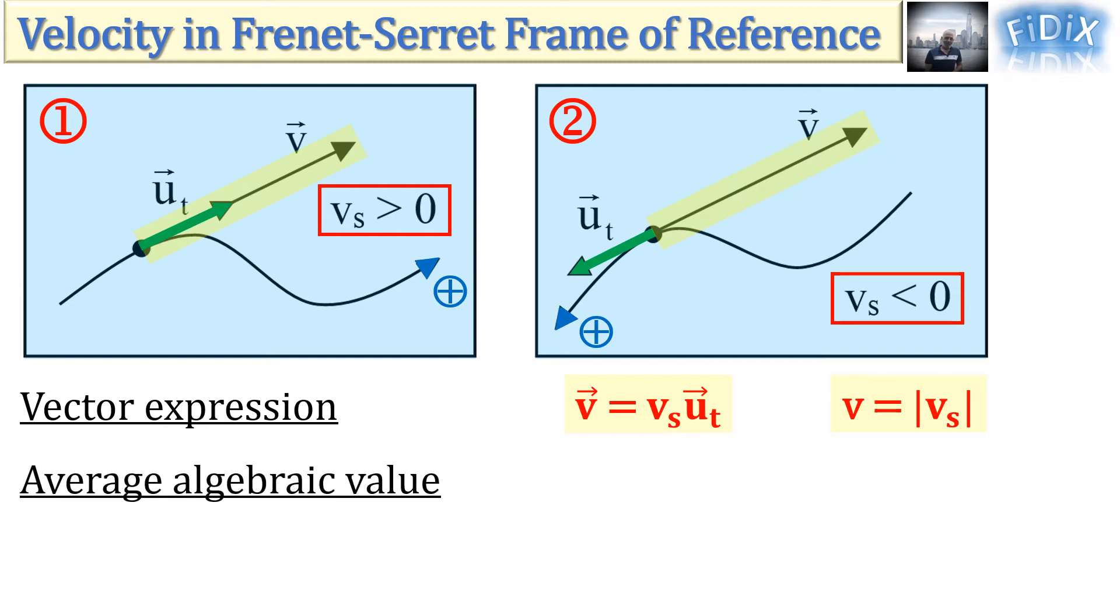The average algebraic value v_s average is equal to delta s over delta t, where delta s is the change in curvilinear abscissa, and delta t is the corresponding duration. It is thus the change in curvilinear abscissa per unit time. The magnitude v_s average of the average velocity, also called average speed, is the absolute value of v_s average.